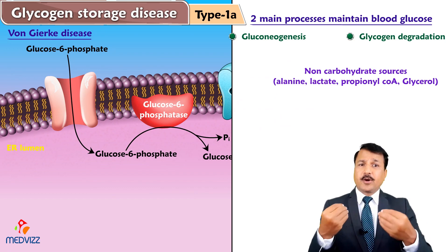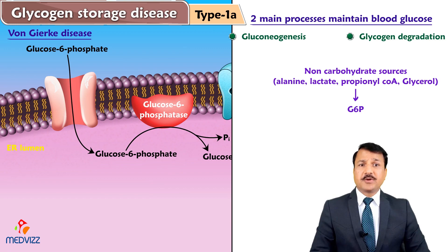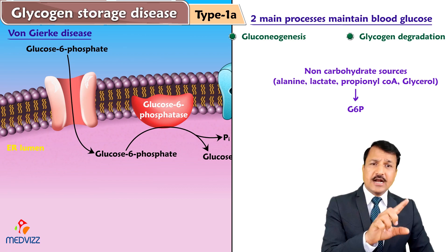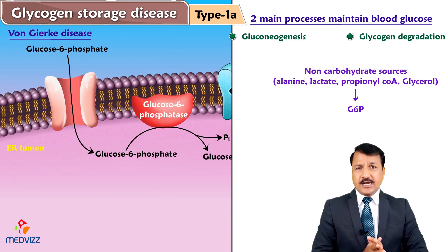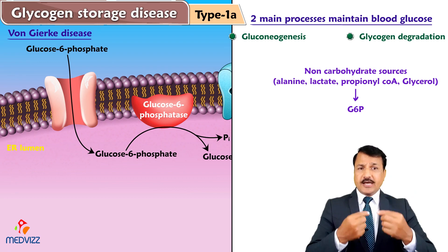Similarly for gluconeogenesis, when non-carbohydrate sources like alanine, lactate, propionyl-CoA, or glycerol are ultimately converted into glucose-6-phosphate, that glucose-6-phosphate has to go into the lumen of the endoplasmic reticulum to be converted into glucose. So for both processes — gluconeogenesis and glycogen degradation — you need glucose-6-phosphatase as the final enzyme, and it is located in the lumen of the endoplasmic reticulum.